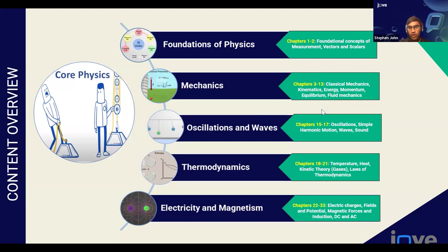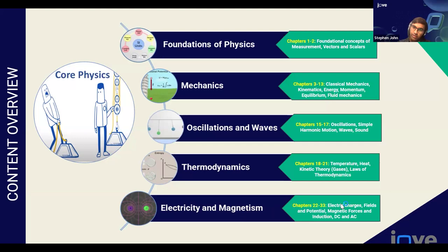Under Oscillations and Waves, chapters 15 to 17 deal with oscillations, simple harmonic motion, wave equations, and sound. Under Thermodynamics, chapters 18 to 21 cover temperature, heat, kinetic theory, the behavior of gases, and the laws of thermodynamics. In the last section, Electricity and Magnetism, chapters 22 to 33 deal with electric charges, fields, direct current, alternating current, and solving circuit problems.